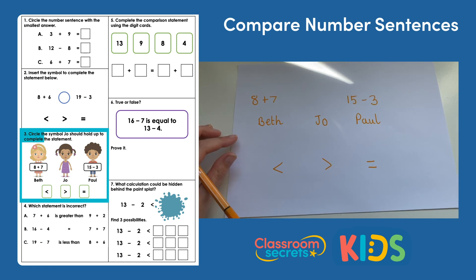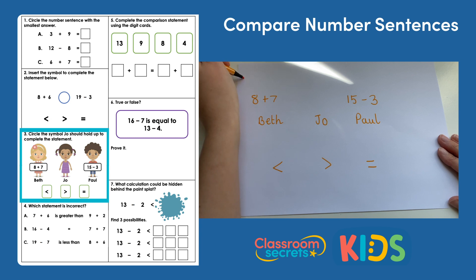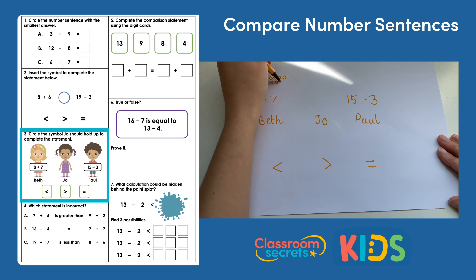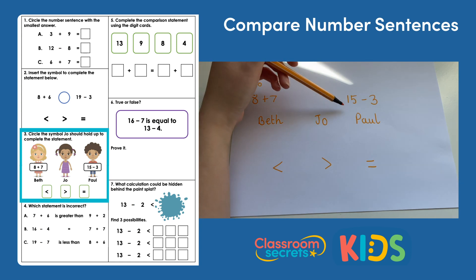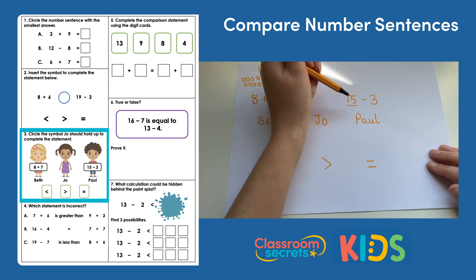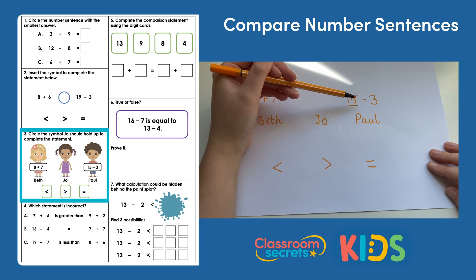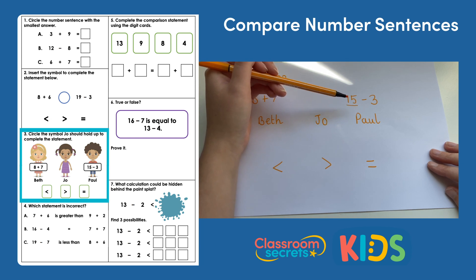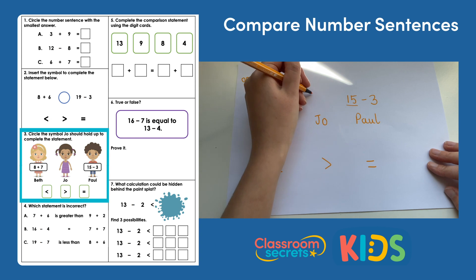Question number three. Circle the symbol Joe should hold up to complete the statement. Again we need to find out the answer to each calculation to know which symbol to use. So we've got eight add seven again. So eight dots and seven more. And I'm going to start from eight and count on seven. Eight, nine, ten, eleven, twelve, thirteen, fourteen, fifteen. Now I know that the next calculation is 15 subtract three. And we're taking away from 15, which is the same number. If we take any number away from 15 that's above zero, we're going to get a number that's less than 15.